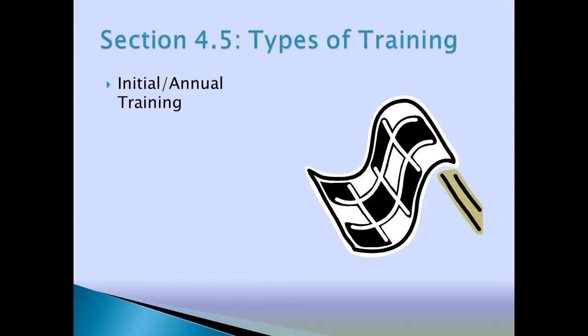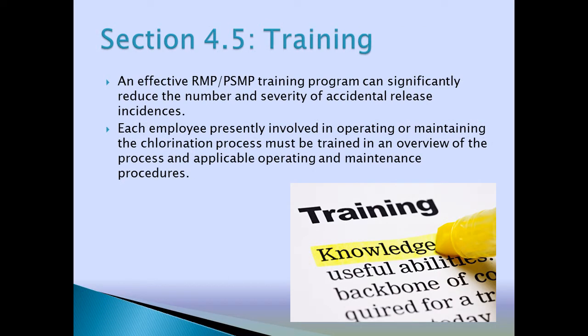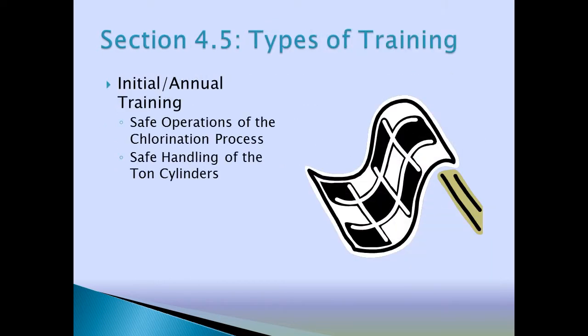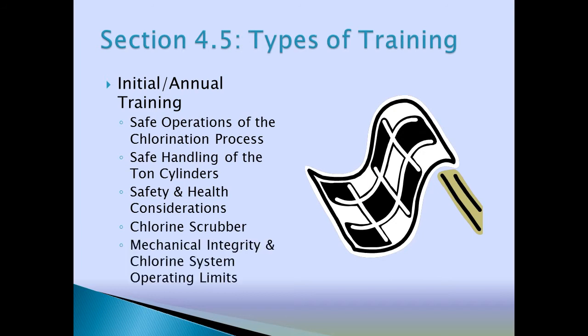This section has a training component. Training includes: training when someone starts working at the facility that handles that chemical, training for everyone exposed to the hazard, training after any accidental release so everyone can get back on the same page, and remedial training on every component of your plan — initial training and then remedial training on every component.